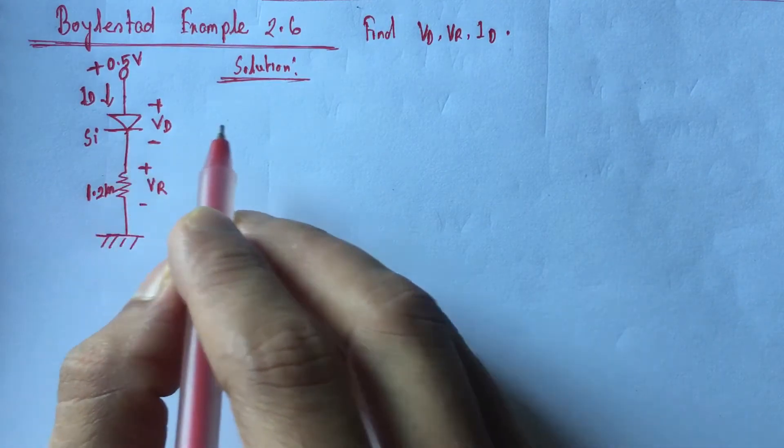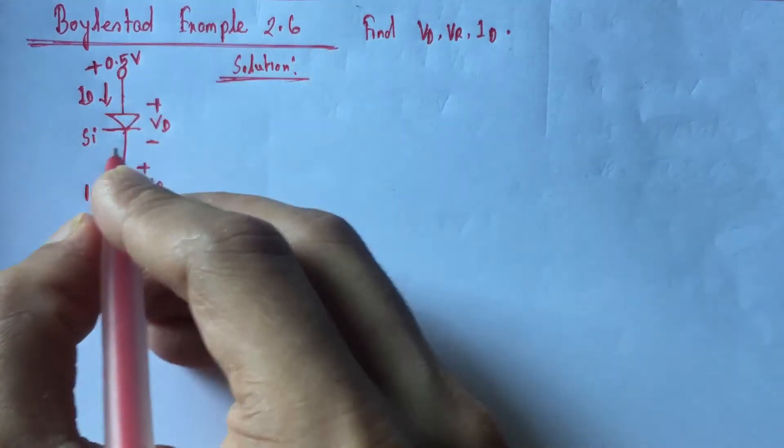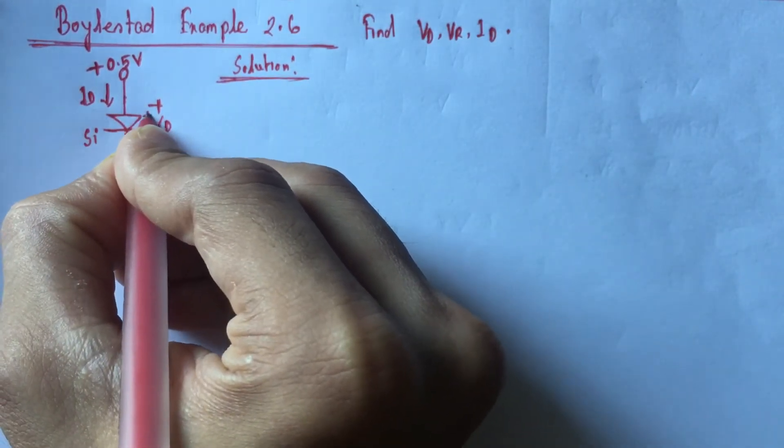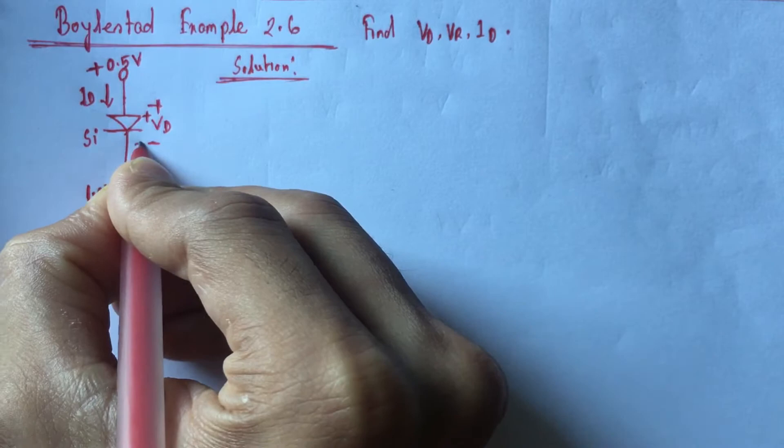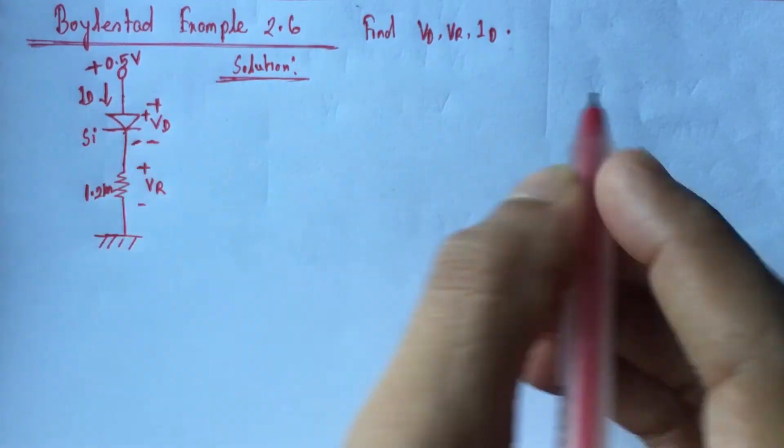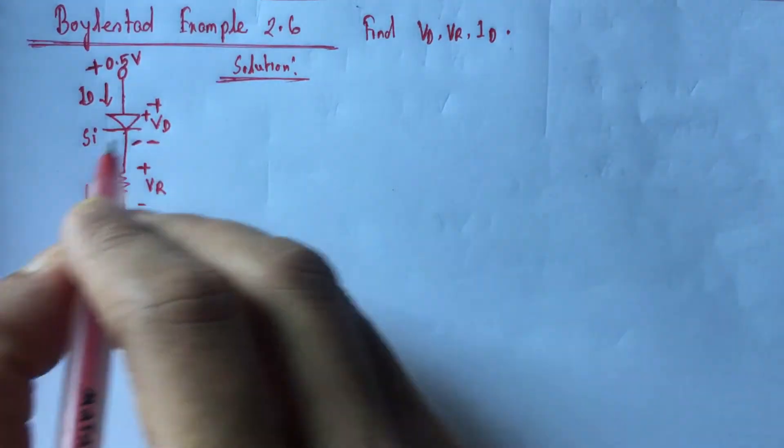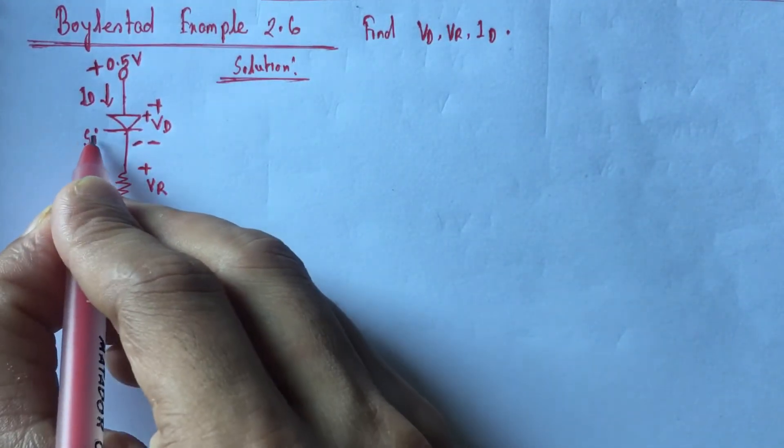We see that the positive end of this diode is connected and the negative end of the diode is in. Now the biasing voltage is 0.5 volt and the diode is forward biased. This is a silicon type diode.